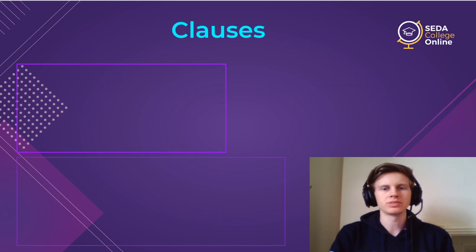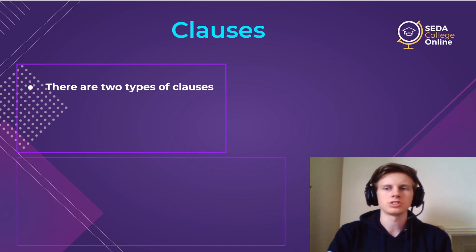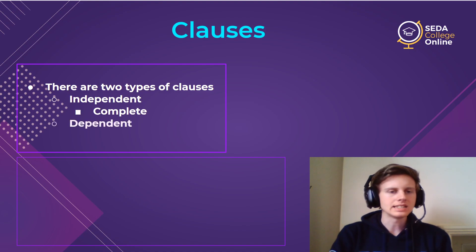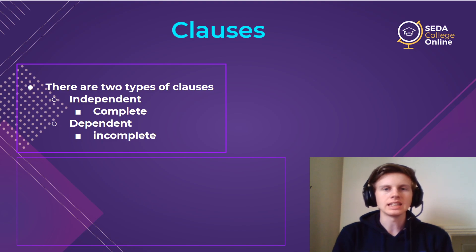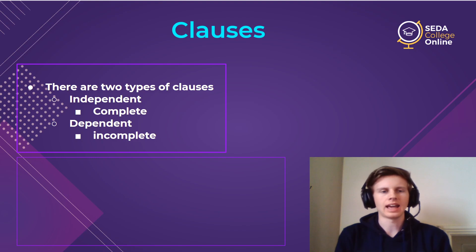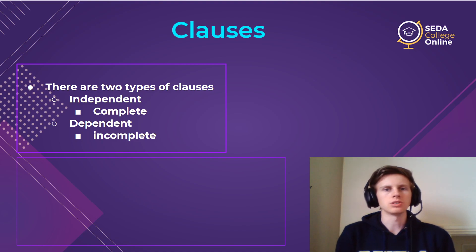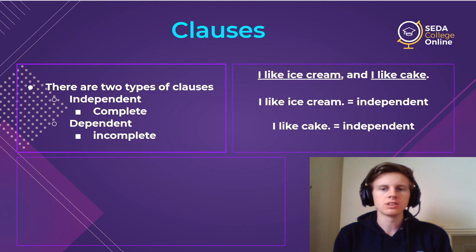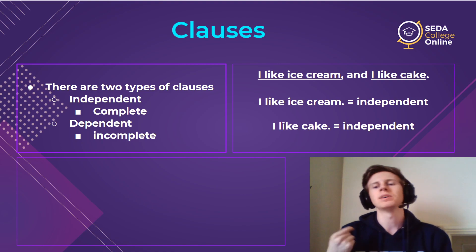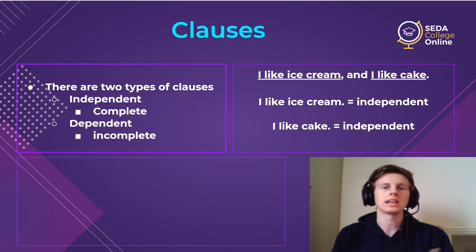So we're going to do a little bit of review. One of the key concepts I talked about in the last video are clauses, and I'm just going to briefly cover this again just to remind everyone. Remember there are two types of clauses: independent, which were totally complete, and dependent, which were incomplete. A clause is the smaller parts of a sentence. For example, 'I like ice cream and I like cake' — that's one sentence, but we have two independent clauses. We can separate it: 'I like ice cream,' 'I like cake' — both are totally complete sentences.